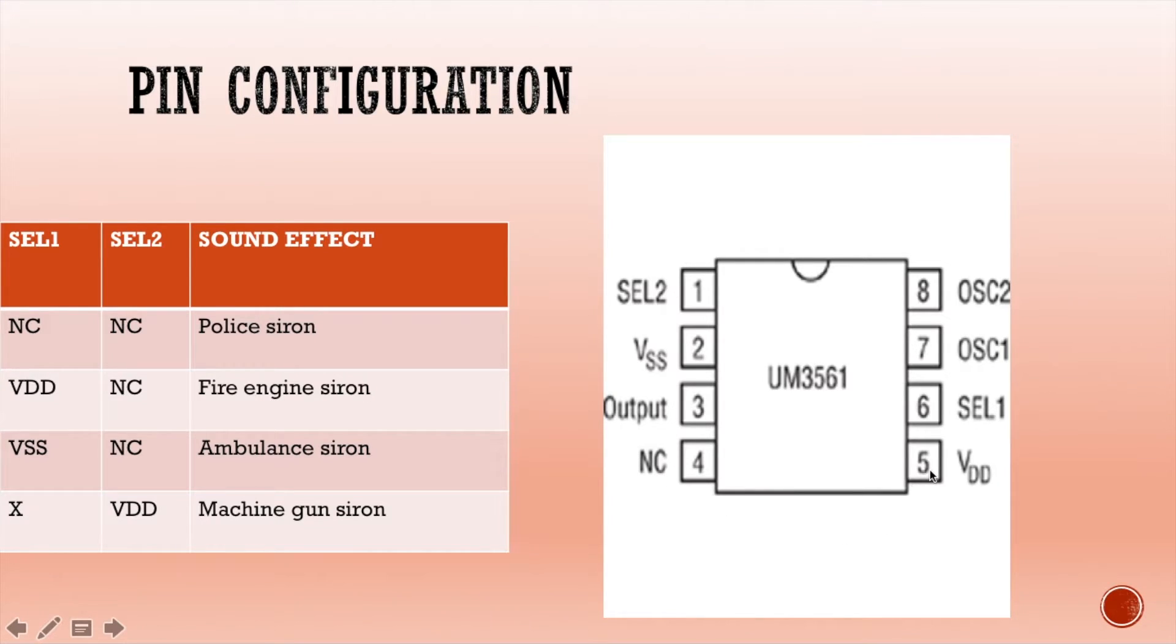Pin number 5 is VDD, which is the positive connection of your battery or power supply. Pin number 6 is SEL1, and pins 7 and 8 are the oscillator pins. We need to connect a resistance between pins 7 and 8, which is normally 300 kilo-ohms. SEL1 and SEL2 are the two different pins which can be used to generate different sounds. We need to vary SEL1 and SEL2 connections.